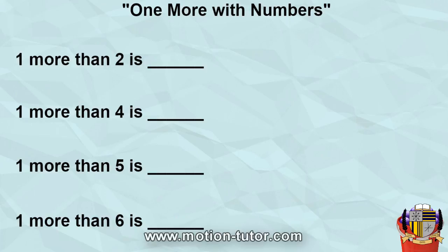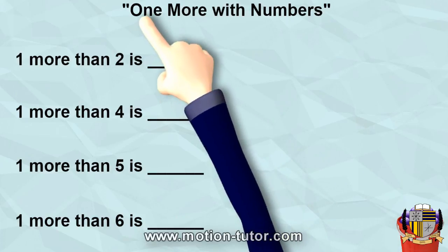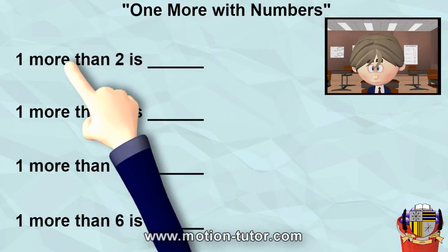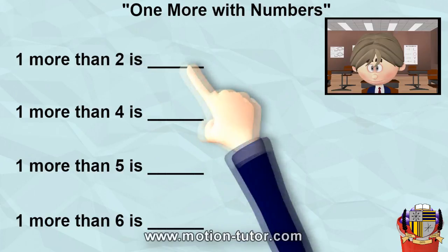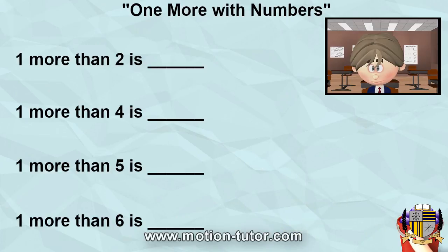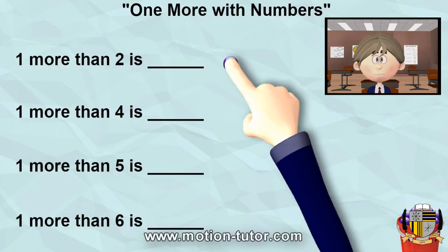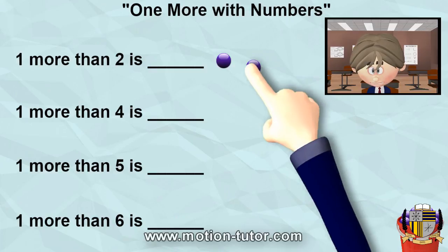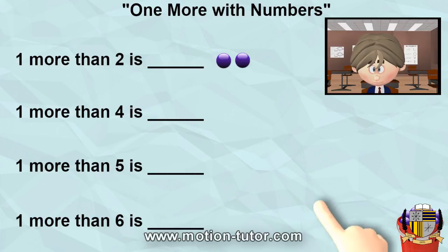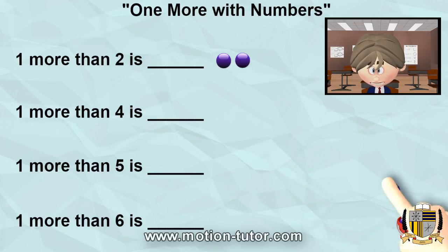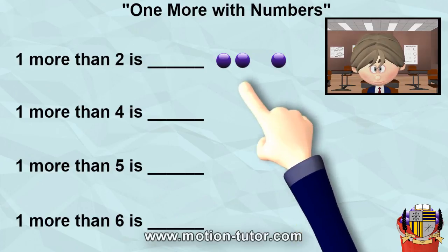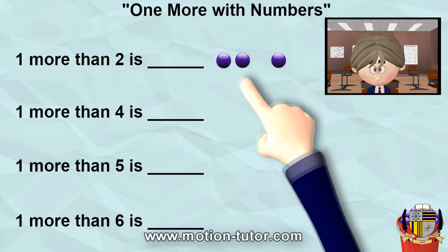Okay, so now we are on my tablet. One more with numbers. One more than two is... so what is one more than two? Let's look at it visually. I will put two, and we're going to see how one more looks. So that's two. One more than two would be one more — like that. So one more than two is one, two, and three. Three.